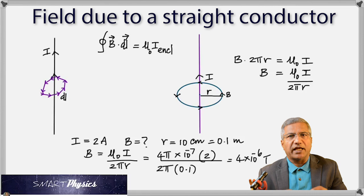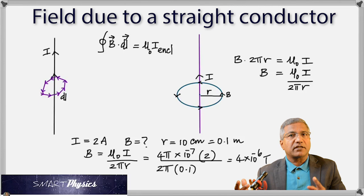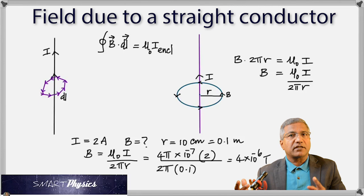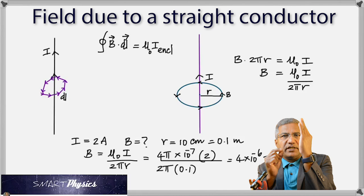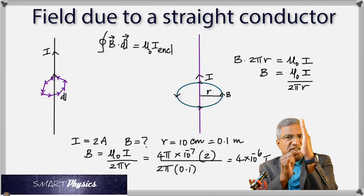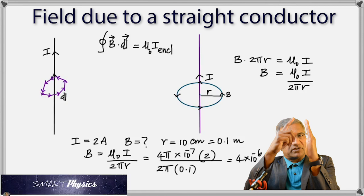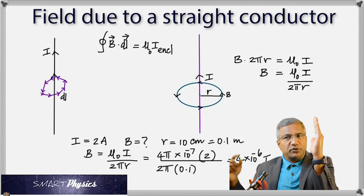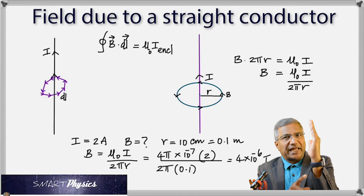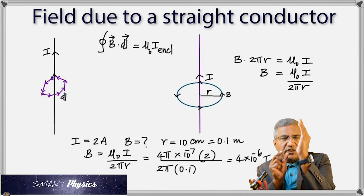For this formula to be applied, the conductor needs to be infinitely long. In practice, if the point is very close to the conductor — meaning r is much smaller than the conductor's length — you can treat it as infinitely long. However, if r becomes comparable to the conductor's length, you cannot use this formula. The distance of the point must be significantly smaller than the length of the conductor.